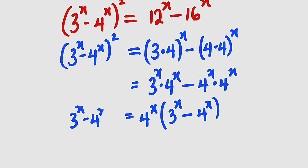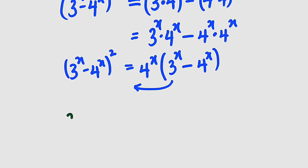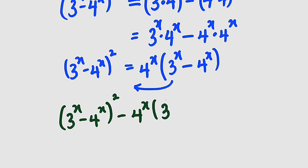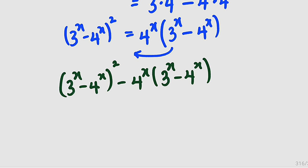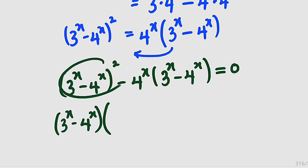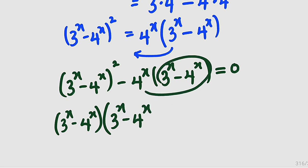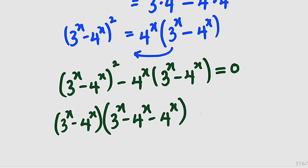We have 3 to the power of x minus 4 to the power of x, whole squared. Now I would like to take this term to the left-hand side. We have 3 to the power of x minus 4 to the power of x, whole squared on the left. As this crosses over, it becomes negative 4 to the power of x multiplied by 3 to the power of x minus 4 to the power of x. If you observe, what we have under the parentheses are exactly the same, so we can factorize this. Remember to equate this to 0.